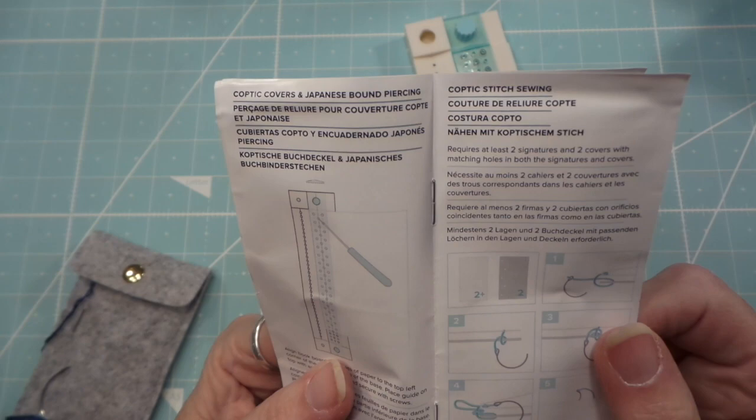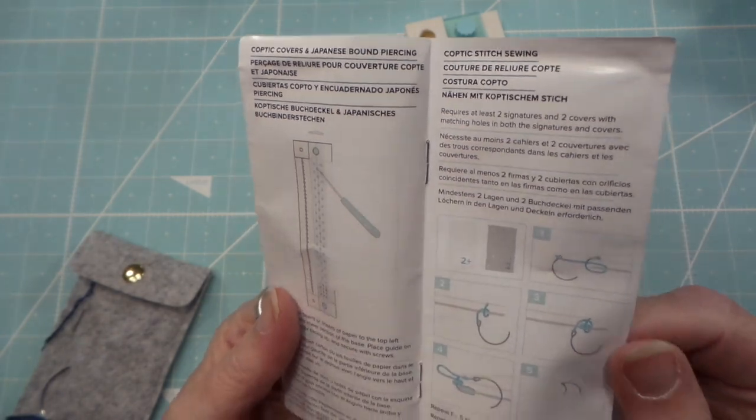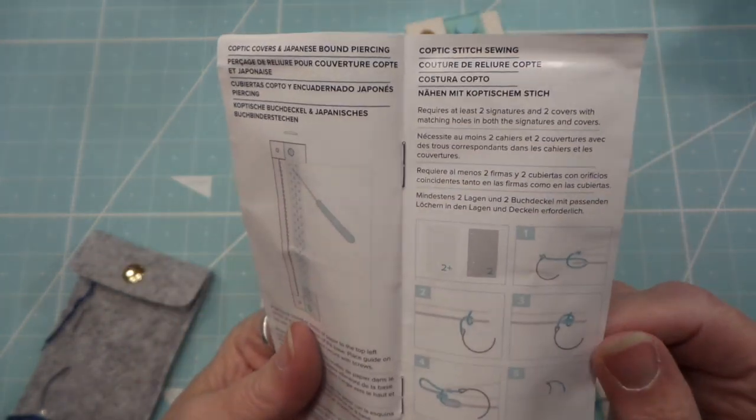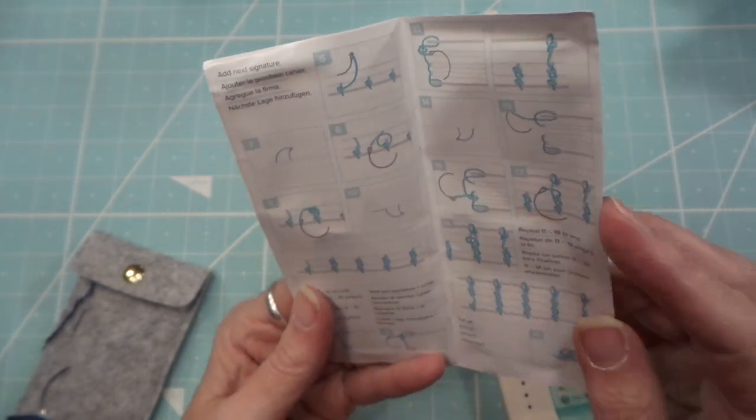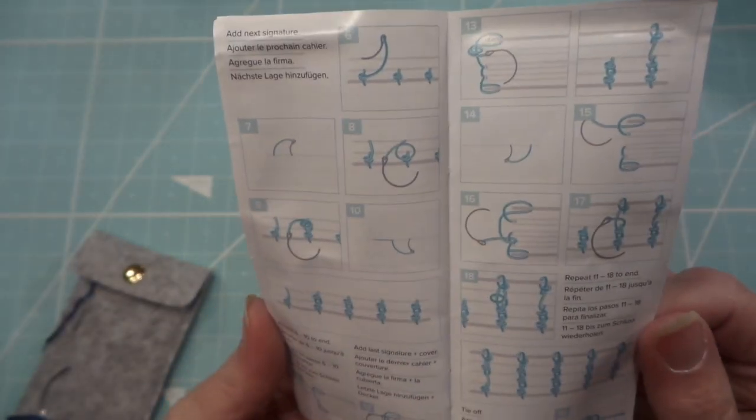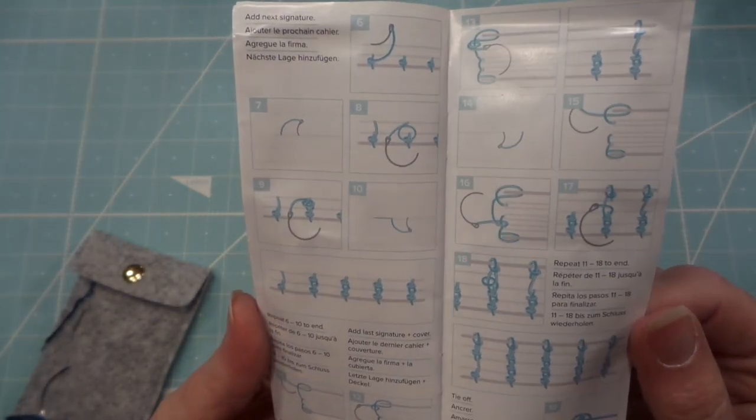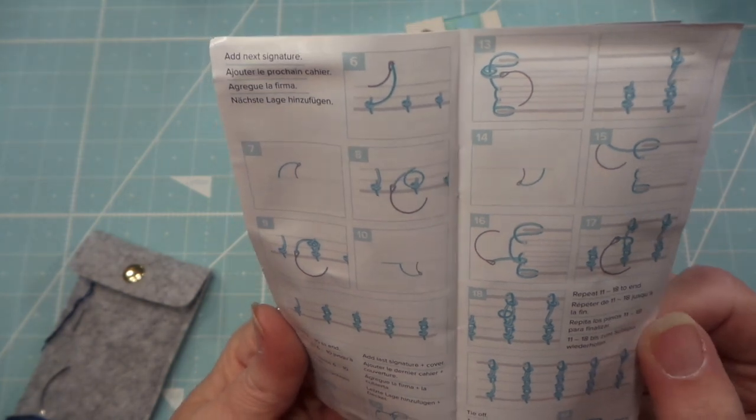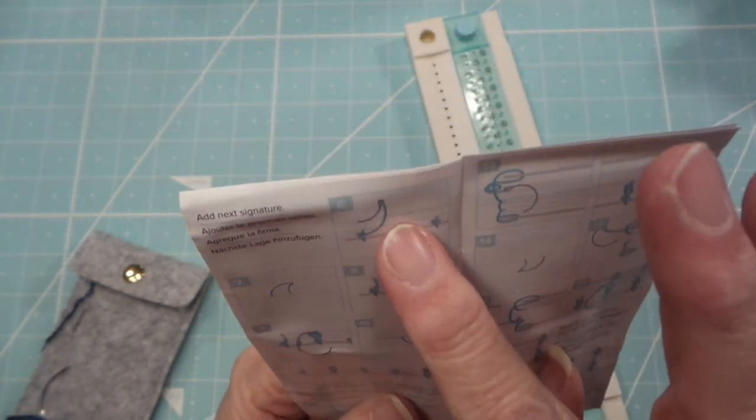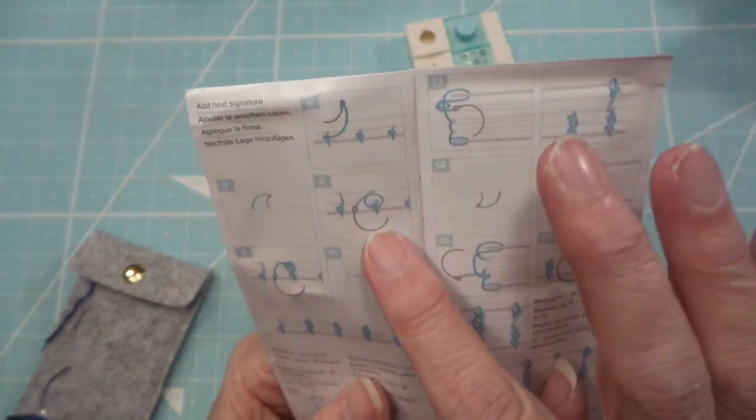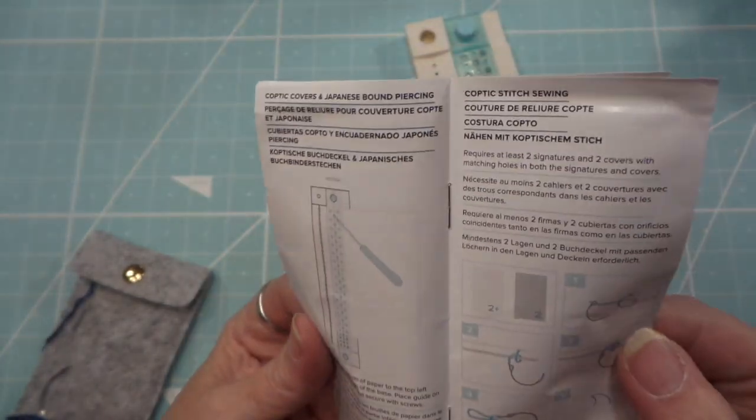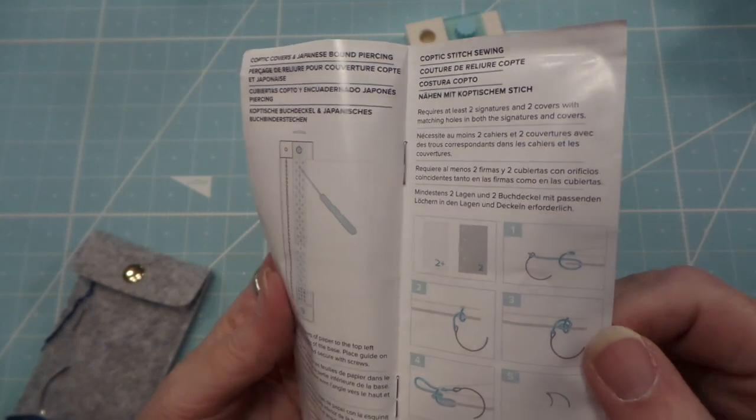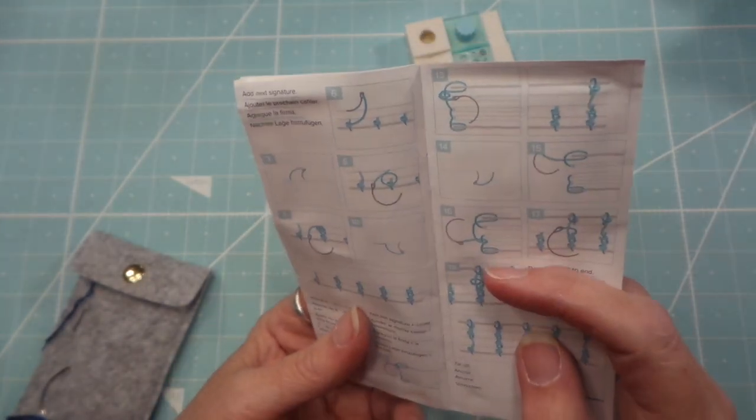As you know with the tassel, the little tassel thing, their instructions on that are not correct at all and they couldn't even figure it out. So anyways, they're kind of like this is how to do the coptic stitch, it looks like, but I think there's better.